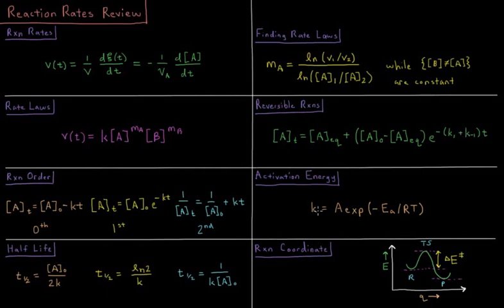The rate constant is going to be determined by the Arrhenius equation, which tells us how it depends on temperature. It's going to equal a pre-exponential factor times the exponential of the negative activation energy divided by the gas constant times temperature.